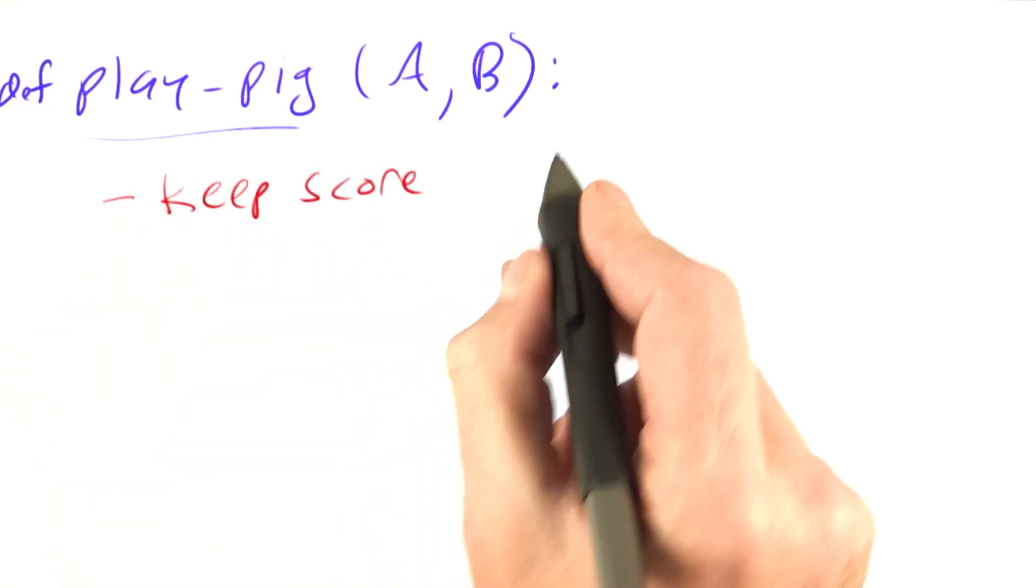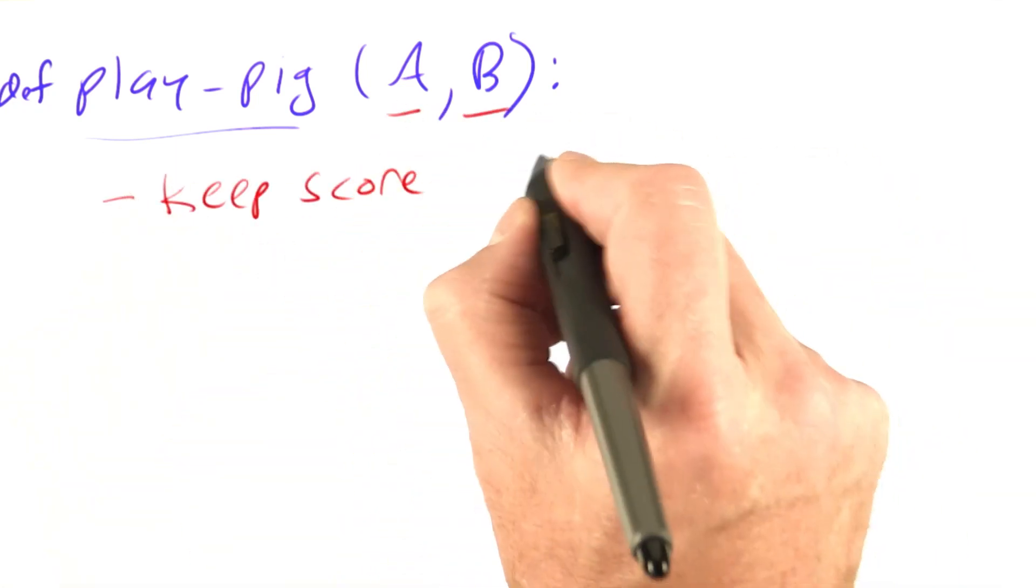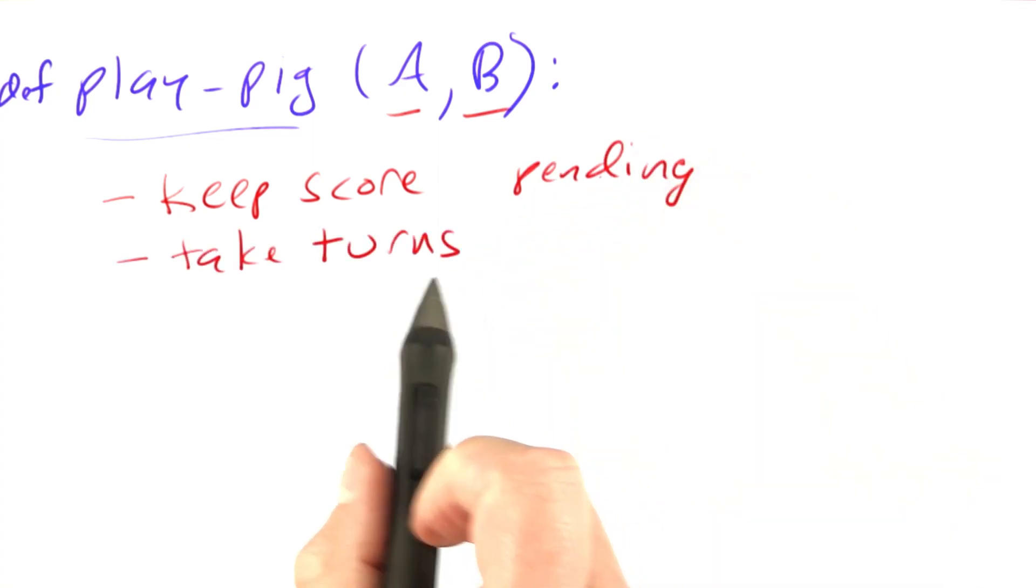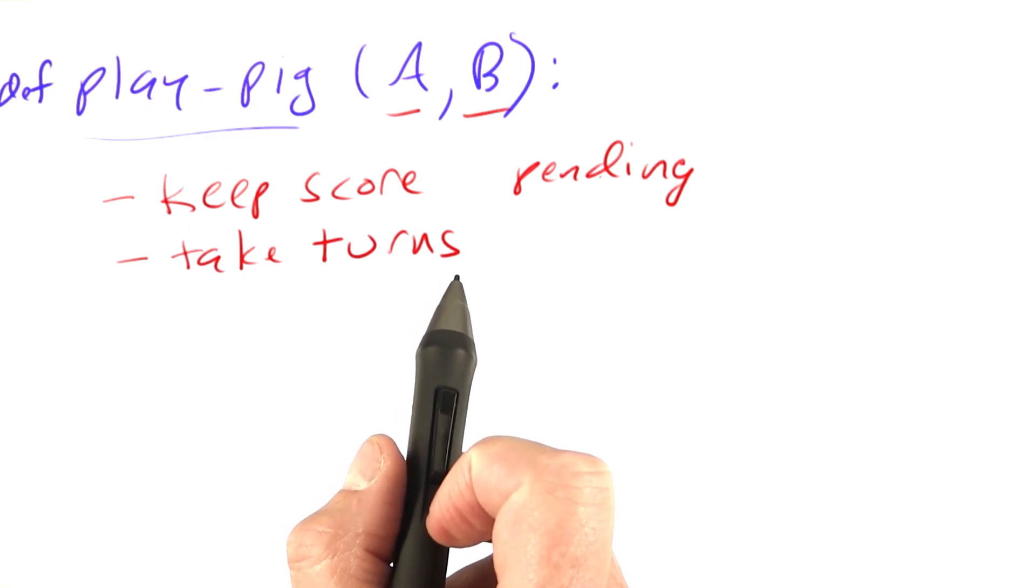It has to keep score. It needs the score for player A and for player B and for pending. It has to take turns. It has to figure out whose turn it is and that turn keeps going until they hold or Pig out.